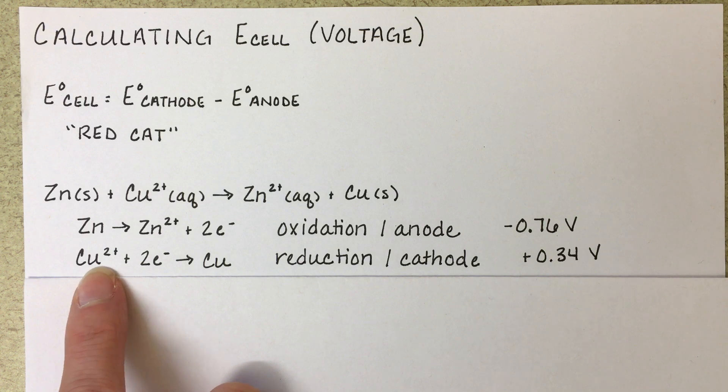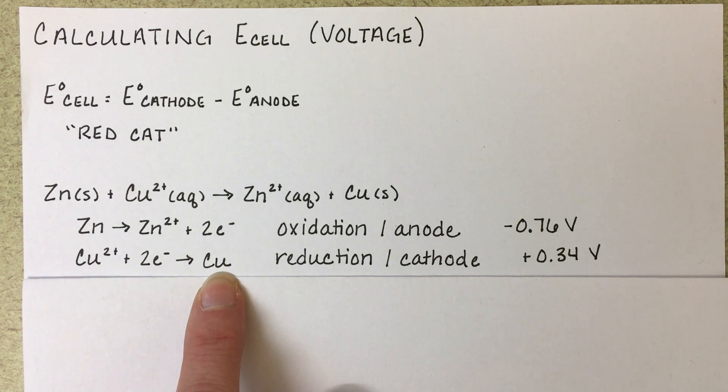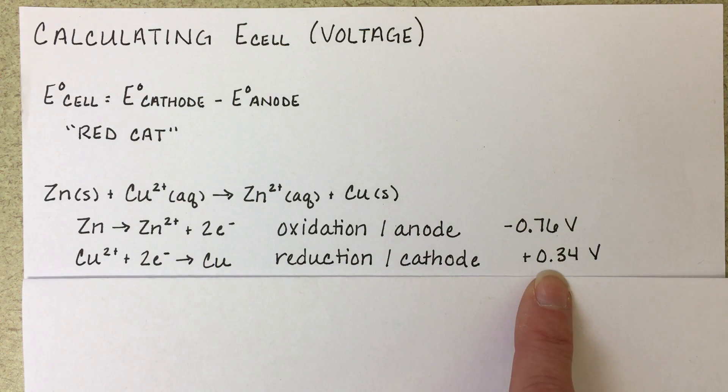You should have no problem finding this reaction in your table of reduction potentials. The voltage of this half reaction is 0.34.